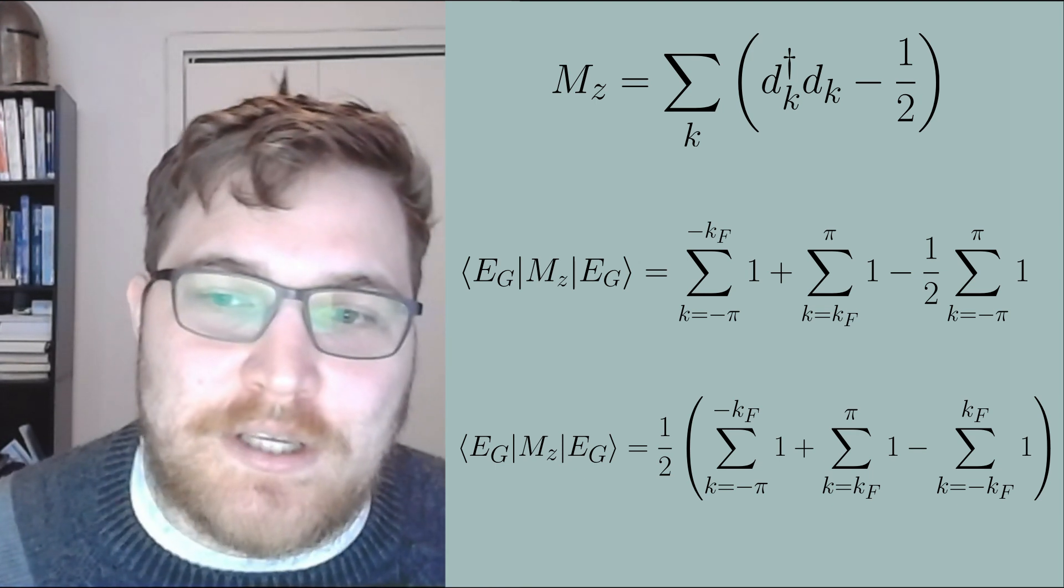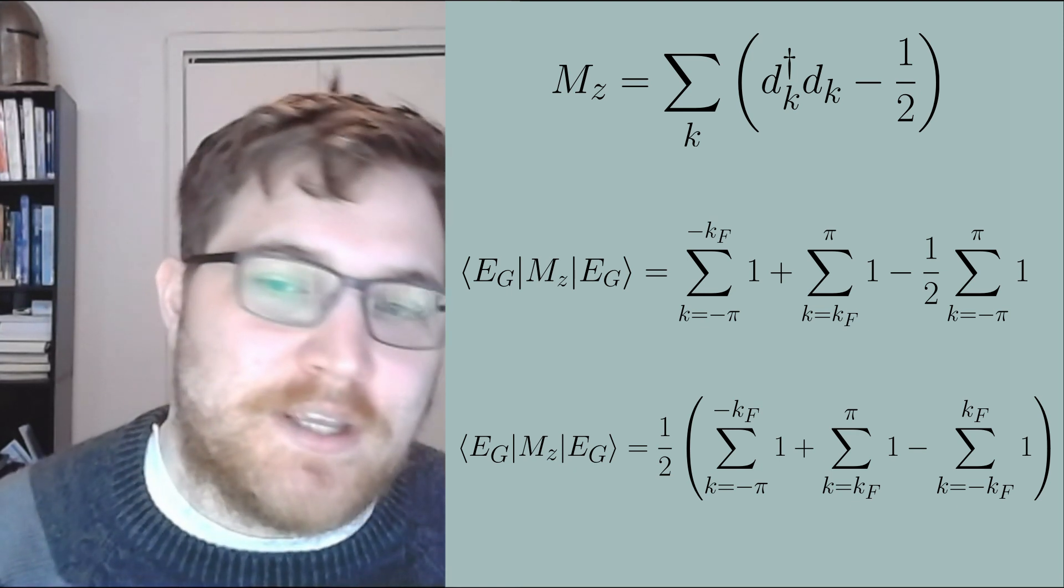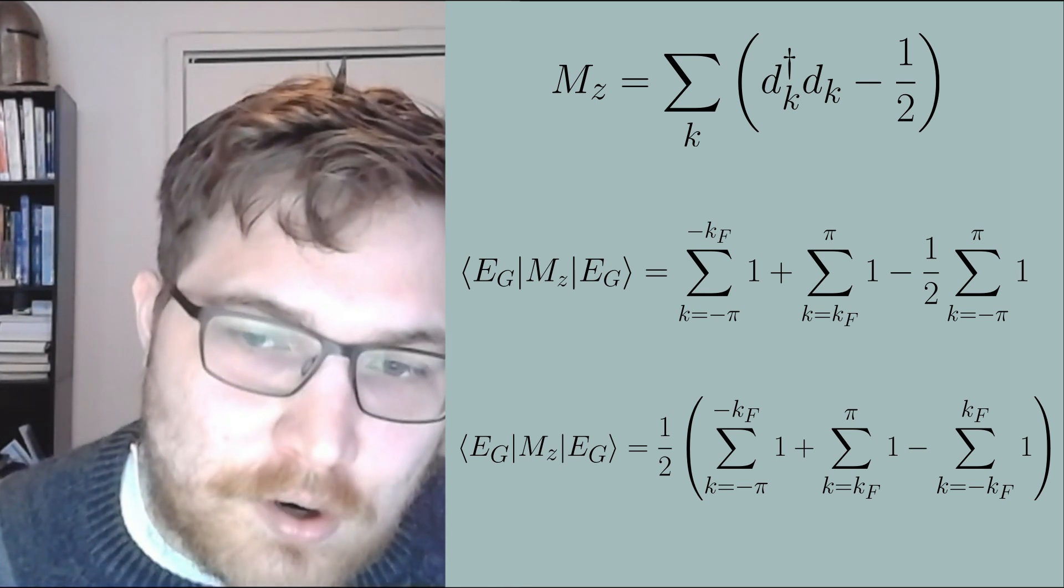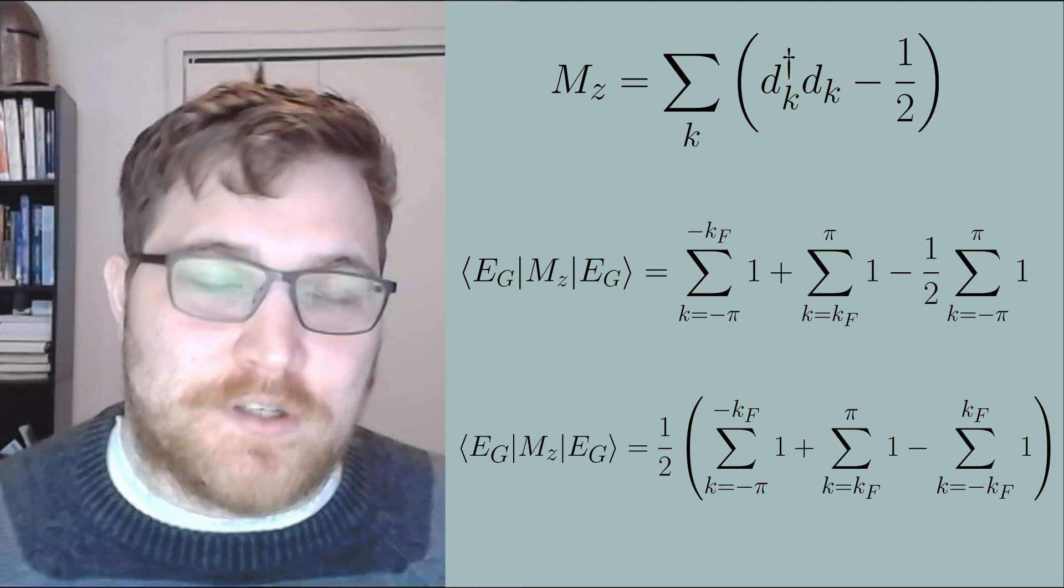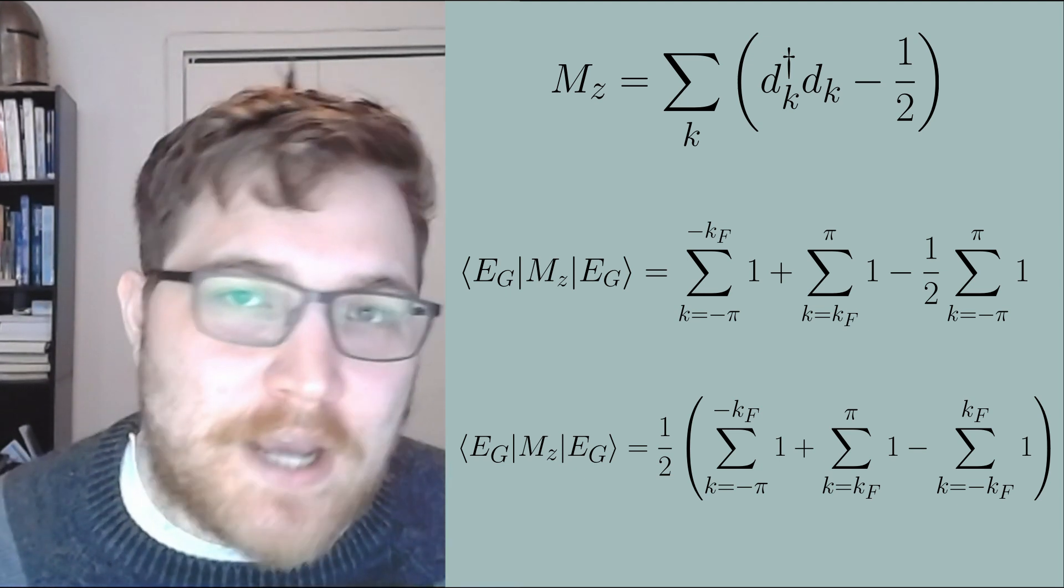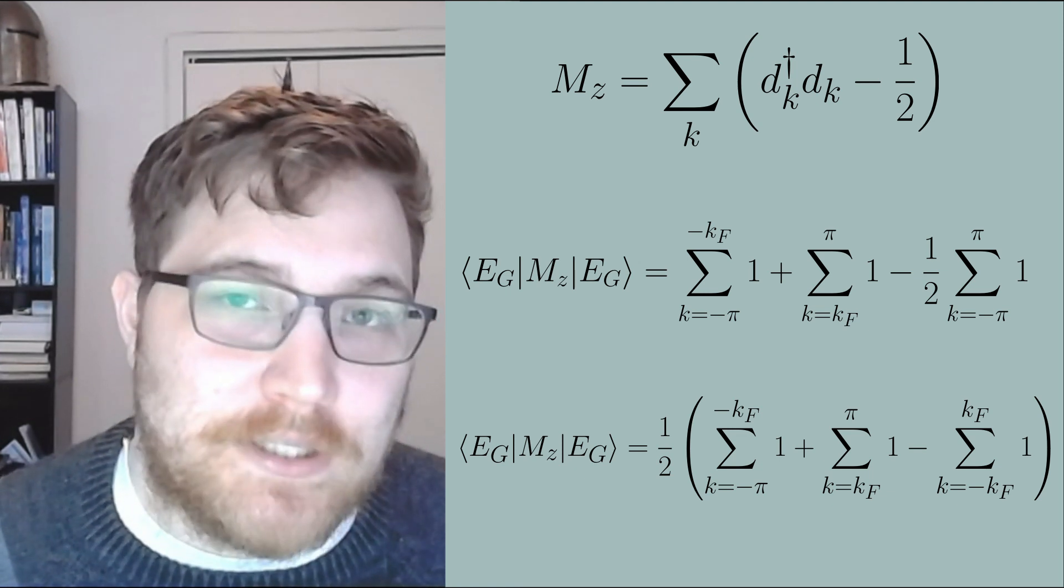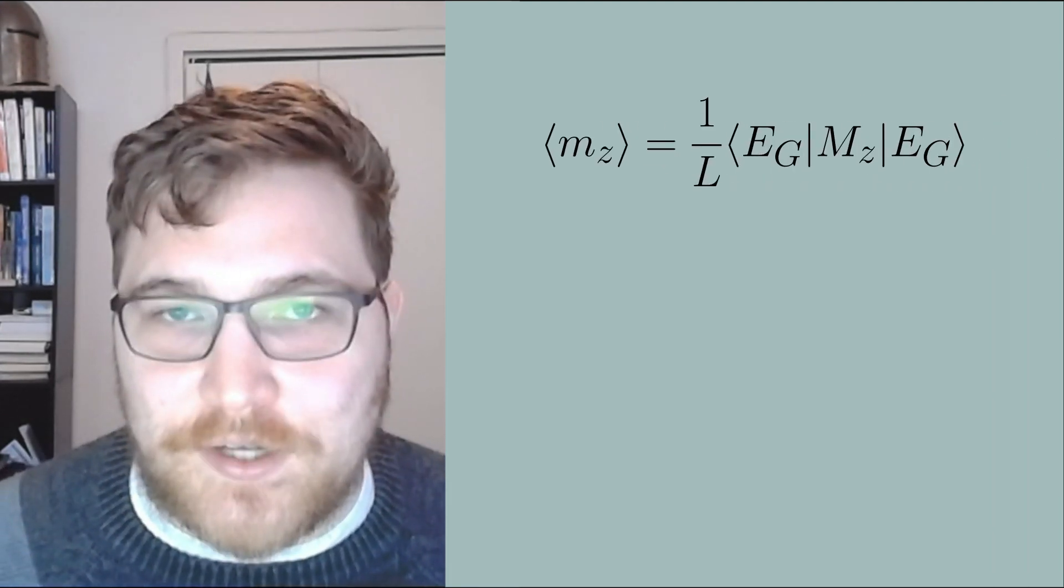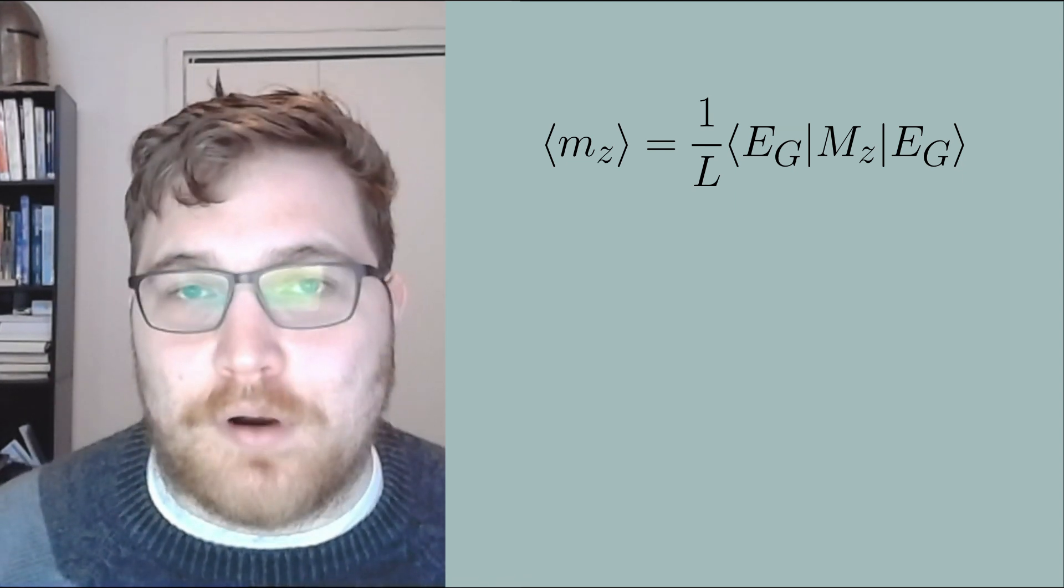We see the magnetization is just two competing summations equivalent to half the difference between the negative eigenmodes and the positive ones. If there are the same number of negative eigenmodes as positive ones we would have zero magnetization. Likewise if all of the eigenmodes were negative or positive that would correspond to a completely magnetized state for the ground state. To make our expression more manageable we will transform it into the total magnetization per site, which corresponds to dividing out the number of lattice sites.